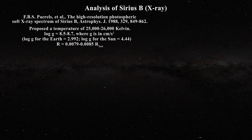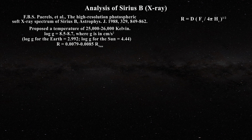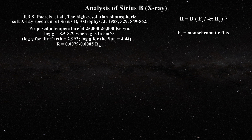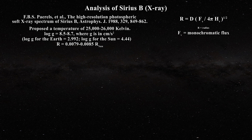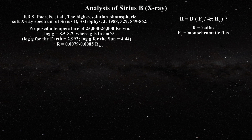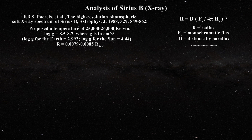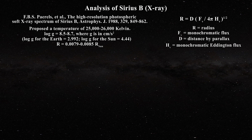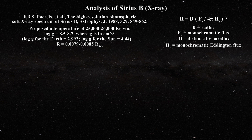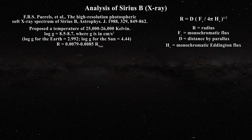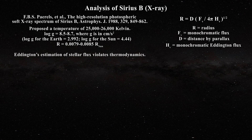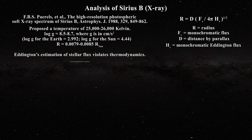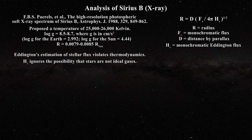As we saw previously, the radius is derived from this equation where F_V is the monochromatic flux for the star, R is the radius, D is the parallax, and H_V is the monochromatic Eddington flux calculated from the white dwarf model. To start, Eddington's estimation of stellar fluxes violates thermodynamics and ignores the possibility that stars are not ideal gases, as we saw in this video.